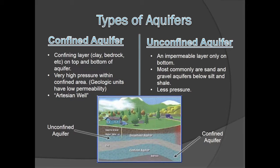Regardless of the materials that make up the aquifer, all aquifers are classified as either confined or unconfined. Confined aquifers are located between two impermeable or confining layers, like clay or bedrock. Confining layers are sometimes referred to as aquitards. Because the aquifer is confined, it's under very high pressure, which causes artesian wells. Unconfined aquifers only have a single impermeable layer below and a permeable layer above. Most unconfined aquifers are sand and gravel with a layer of silt or shale above. Since the aquifer is unconfined, it is at a much lower pressure than the confined aquifer. The top surface of water in the unconfined aquifer is the water table.